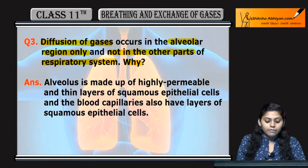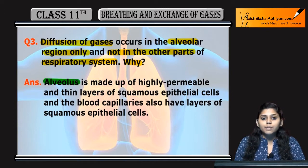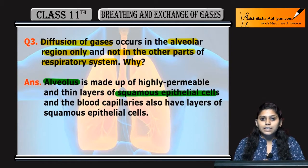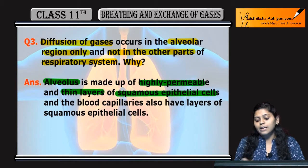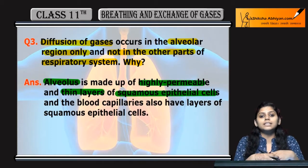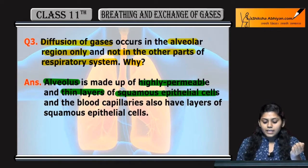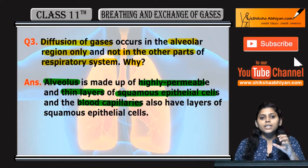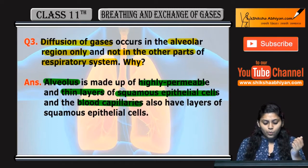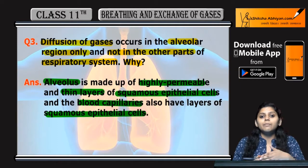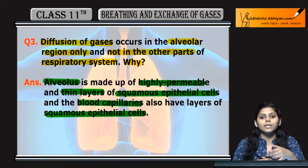The alveolar region is made of squamous epithelial cells. These squamous epithelial cells are thin layers and highly permeable — they allow gases to enter or exit easily. The blood capillaries surrounding the alveoli are also made of squamous epithelial cells. These two thin, permeable layers mean gaseous exchange can easily happen.